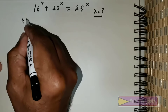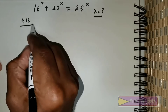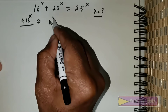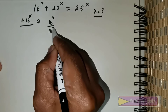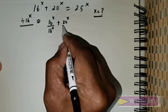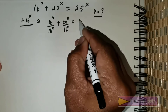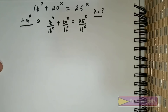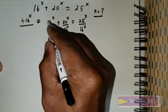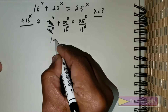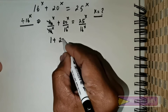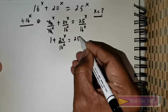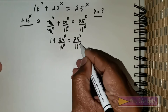First, I am going to divide both sides by 16 raised to the power x. This gives me: 16^x divided by 16^x, plus 20^x divided by 16^x, is equal to 25^x divided by 16^x. Clearly, the first term cancels to give 1, so we have 1 plus 20^x over 16^x equals 25^x over 16^x.